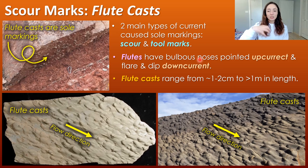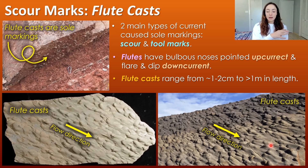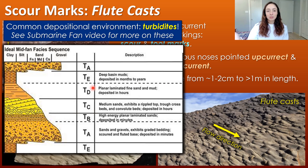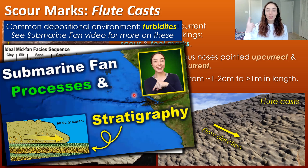Flutes have bulbous noses that are pointed up-current and flare and dip down-current. In the bottom pictures, the flow direction is indicated by the arrow — it's where the noses dip downward and flare out. Flutes and their casts can range in size from one to two centimeters to over a meter in length, so it's a pretty wide range. In terms of depositional environment, they're most common in turbidite sequences — submarine fan environments where turbidity currents carry sediment down into a predictable sequence of deposits, which I cover in more detail in my submarine fan video.